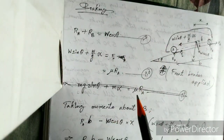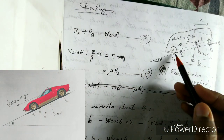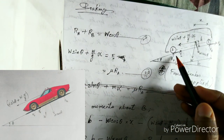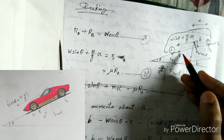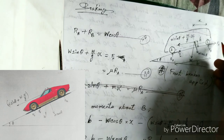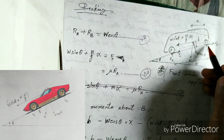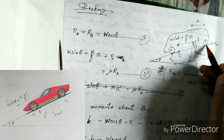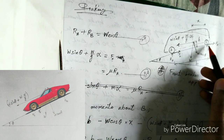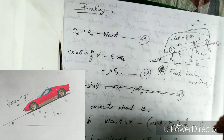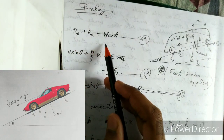In this video we're going to see the braking effect on a vehicle when only the front wheels are braked. FF, that is the front wheel frictional force, has some value, but FR is equal to zero — there is no friction or resistance to the rear wheels; the brakes are not applied to the rear wheels. With this condition, first of all we have RA plus RB equals W cos theta.